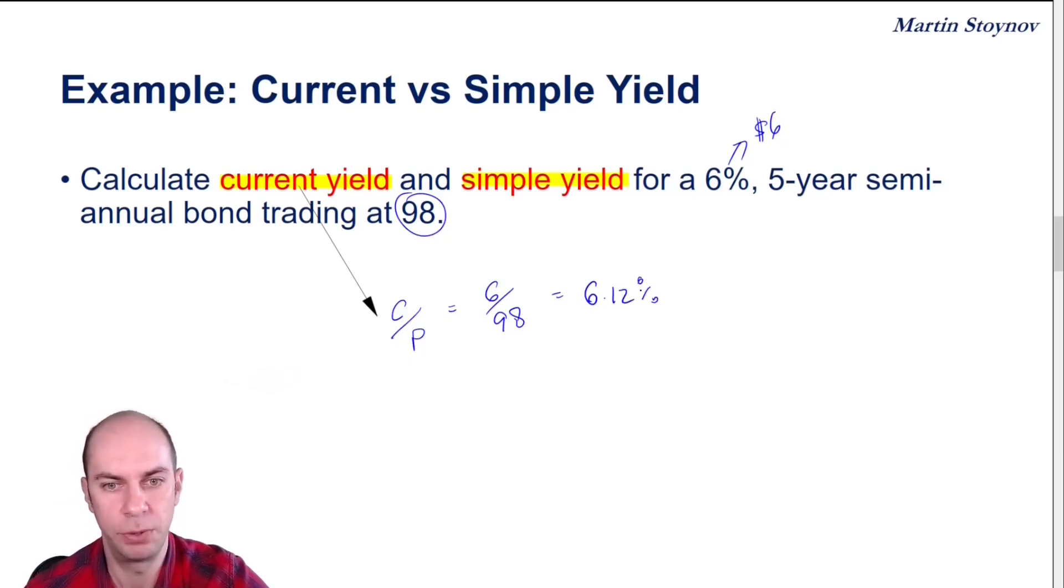And for the simple yield, the first thing I need to calculate is my discount from par. So the par value is $100, my current price is $98. So I've got $2 or 2% of a discount. The maturity of the bond is five years.